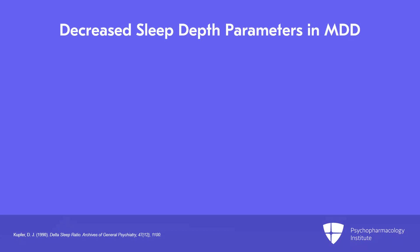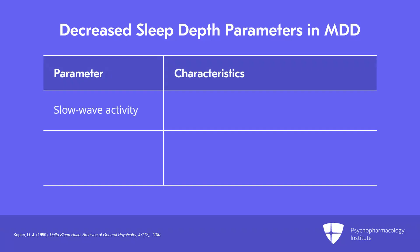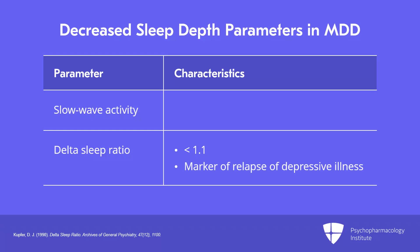In terms of parameters of sleep depth, patients with major depressive disorder have been shown to have reduced slow wave activity and reduced delta sleep ratio, with a value less than 1.1. Low delta sleep ratio has been identified as a marker of relapse of depression in patients with major depressive disorder. Additionally, slow waves during sleep may have a lower amplitude in patients with major depressive disorder as compared to healthy controls.